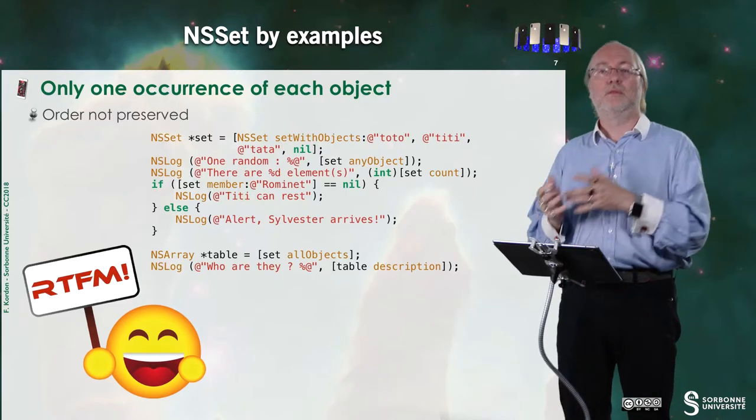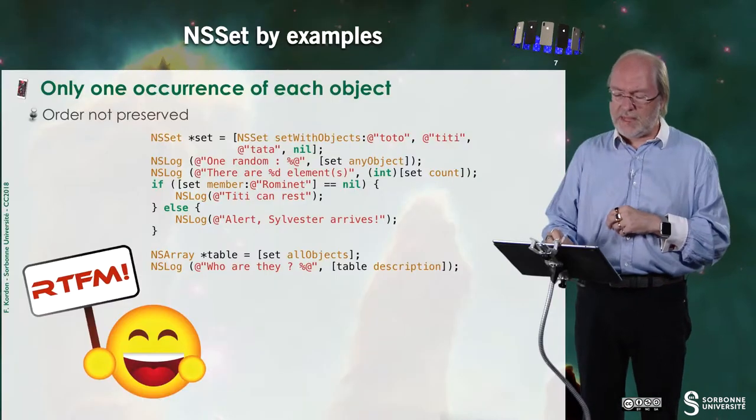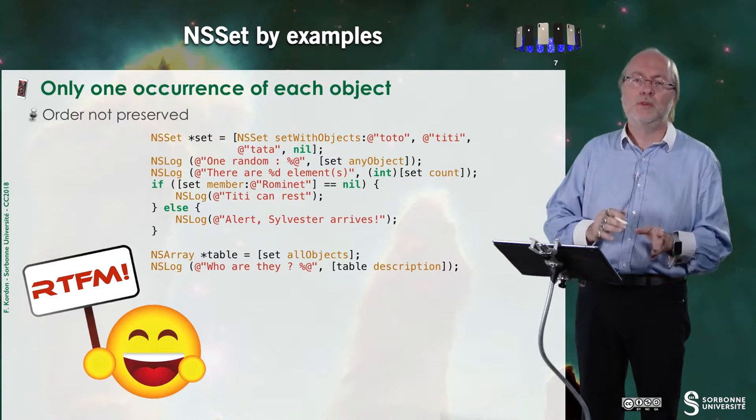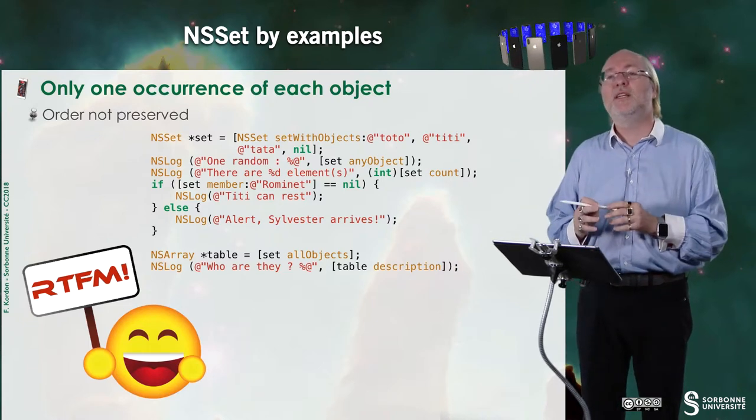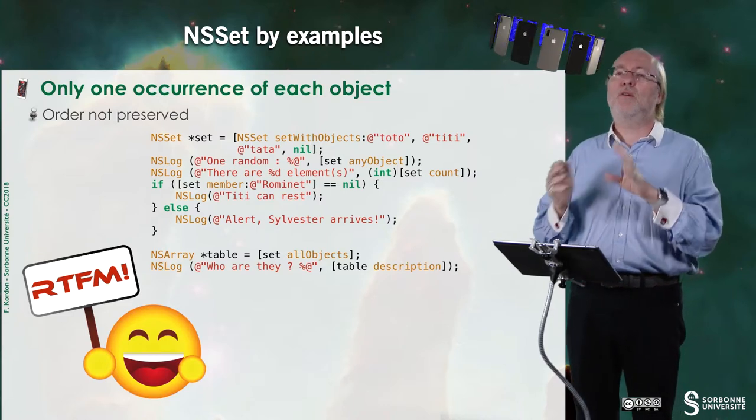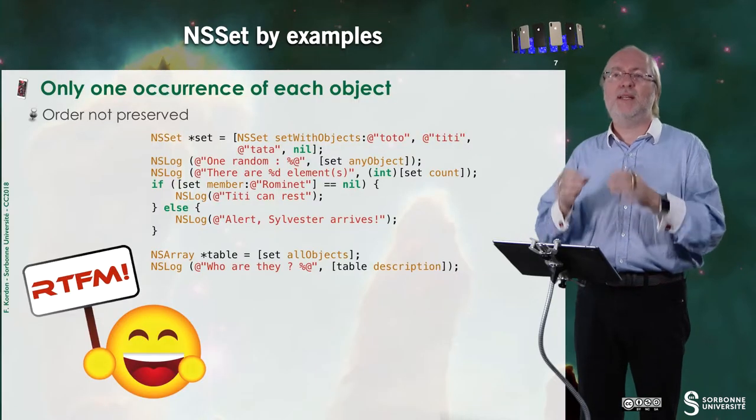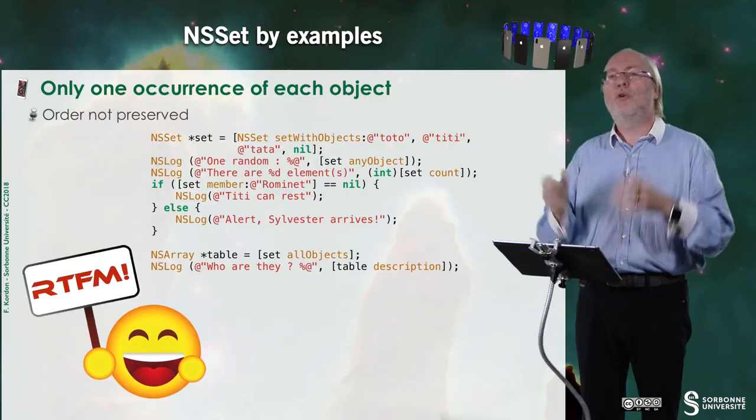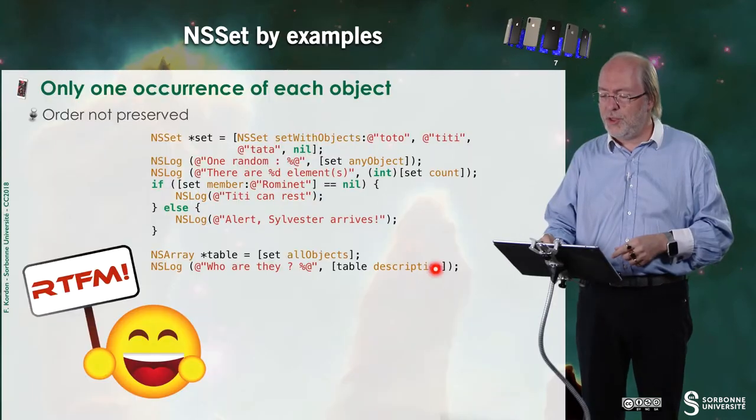I can also report the number of objects that are stored in my set. I can check for the presence of a member in my set. Okay? For example, if homin is there, then tt can rest. Otherwise, there's an alert because the cat is coming. Here I have a method that will transfer all the content of a set into an NSArray. Okay? And then I can have a list of objects that are located in this NSArray. The description method is absolutely not a method for NSArrays or for NSDictionaries or for NSSet or whatever. Description is a method that stands for any object and will try to provide a description of the object as a string. Okay? In fact, as NSString in Objective-C. Okay? So it's very useful if you want to have a trace of a given object, what's inside this object, to use this description method.